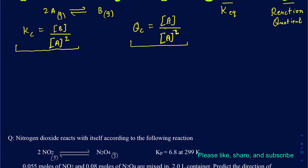In that case, if your Qc comes out to be equal to the Kc, then that means you are at equilibrium, and your reaction is not going to shift to the left or to the right. But suppose your Qc and the Kc are not equal to one another — that means your particular reaction is not at equilibrium, and it's either going to shift to the right side or to the left side until it gets to the equilibrium.